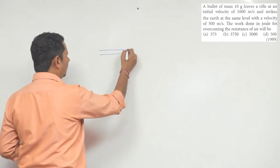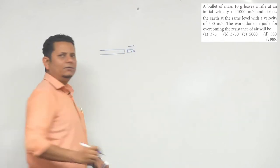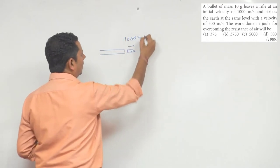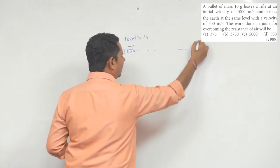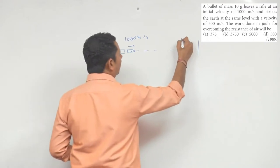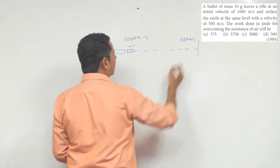The bullet leaves, and when it leaves its velocity is 1000 meters per second. Assuming it travels in a straight line, it hits the target at 500 meters per second.